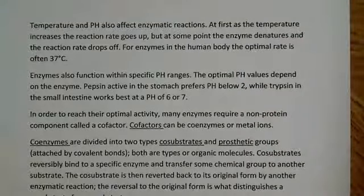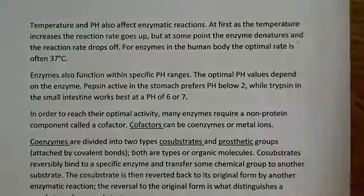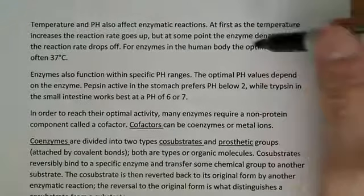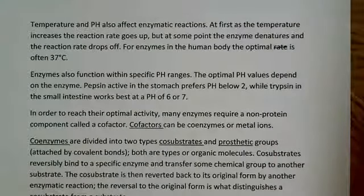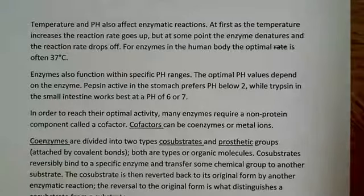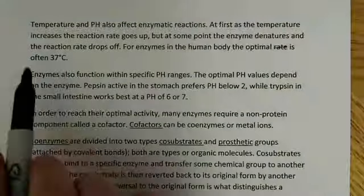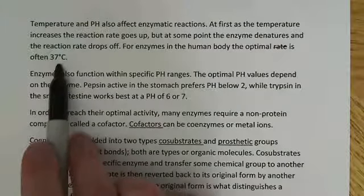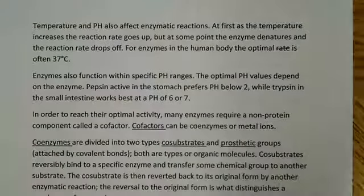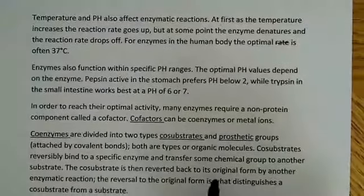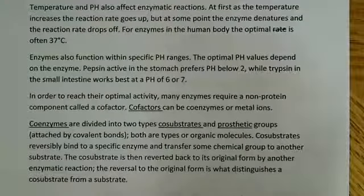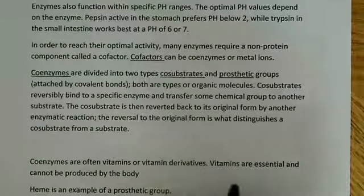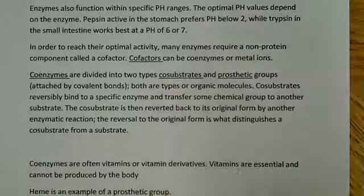For enzymes in the body, the optimal temperature is often 37 degrees Celsius. You might be asked to make calculations at 37 degrees Celsius, but don't make the mistake of just using 37 as a standard number — sometimes problems give you other temperatures, like 25 degrees Celsius, and you make calculations at that.